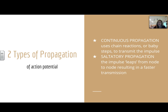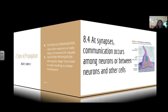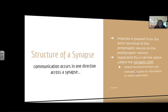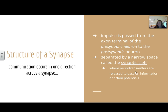There are two types of propagation of an action potential. Continuous propagation involves chain reactions or small steps to transmit the impulse. Saltatory propagation is when the impulse leaps from node to node, resulting in faster transmission. This occurs at synapses, which is what 8-4 covers. The site at which a neuron meets up with another cell is a synapse, with a synaptic cleft in between. Communication only occurs in one direction — an impulse passes from the terminal of the presynaptic neuron to the postsynaptic neuron, across the synaptic cleft. This is where neurotransmitters are released to pass on information, otherwise known as action potentials.